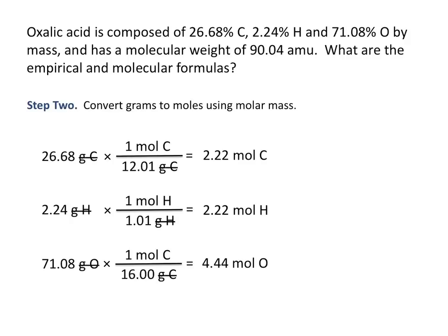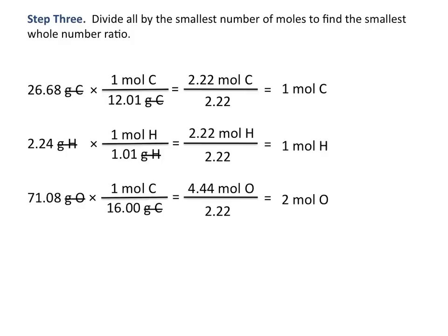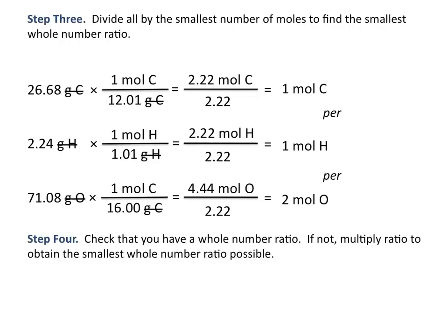This gives us a ratio of 2.22 moles of carbon per 2.22 moles of hydrogen per 4.44 moles of oxygen. To get the smallest whole number ratio, we divide by the smallest number of moles — in this case, 2.22. This tells us there is 1 mole of carbon, 1 mole of hydrogen, and 2 moles of oxygen. Check for a whole number ratio, and multiply if needed to obtain the smallest whole number ratio.